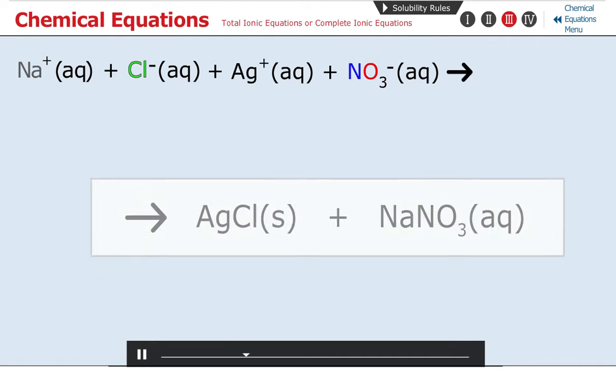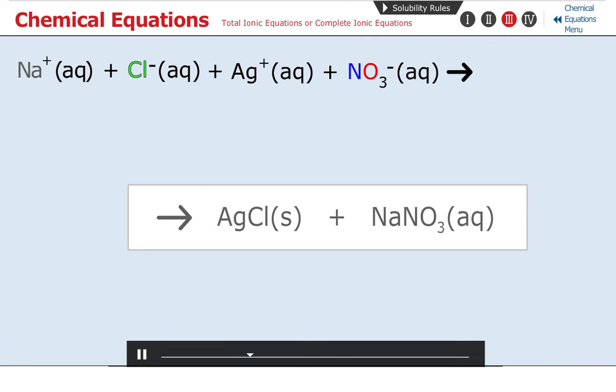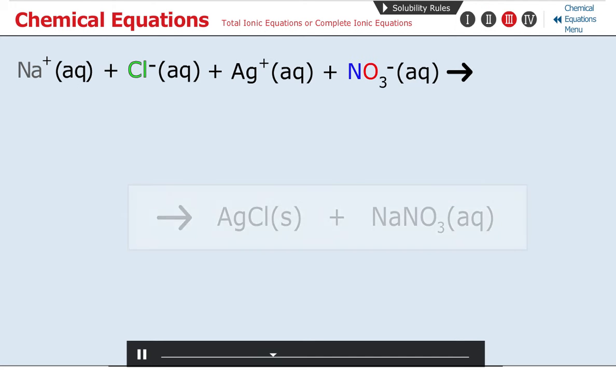Since we know our products from our previous work, we know that silver ions and chloride ions form a precipitate, silver chloride, while sodium ions and nitrate ions remain aqueous. Thus, we write the formula of the precipitate as AgClS.